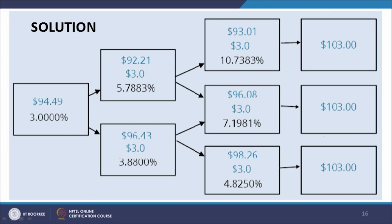At t=2, for the period from t=2 to t=3, the interest rates could move either from 5.788% to 10.7383%, which would be the forward rate for the t=2 to t=3 deposit, or from 5.788% to 7.1981% for the same period. Similarly, from the lower node at t=1, the interest rate could go up to 7.1981% or down to 4.825%.